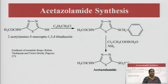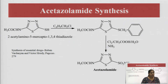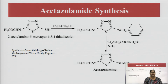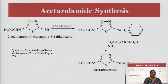The drug of importance from this class is acetazolamide. It is synthesized from 2-acetylamino-5-mercapto-1,3,4-thiadiazole. When it reacts with benzyl chloride, it forms an intermediate, and ultimately in the presence of ammonia, chlorine, acetic acid, and water, it forms acetazolamide. This is a single-step synthesis.